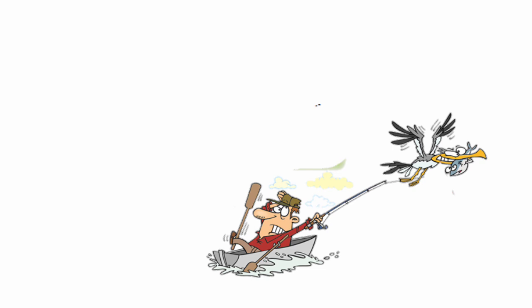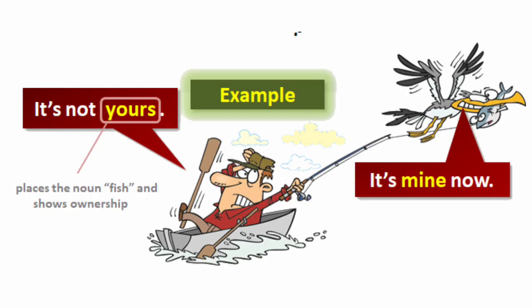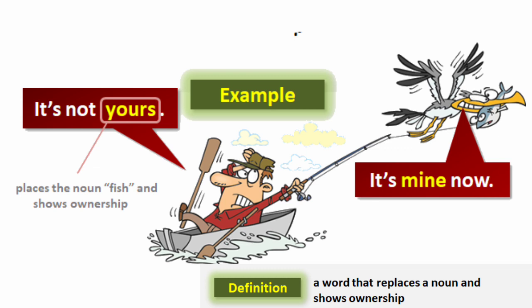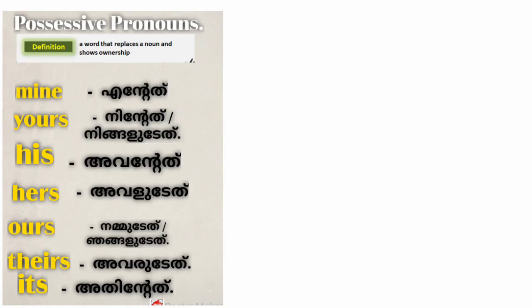The fisherman said to the bird, 'It is not yours,' and he tried to catch the bird. Then the bird said, 'It is mine now,' and the cunning bird flew away with the fish. So look at the definition once again: a possessive pronoun is a word that replaces a noun and shows ownership. The fisherman said 'yours' — not his ownership — and the bird said 'mine.' So 'mine' and 'yours' are two examples of possessive pronouns.